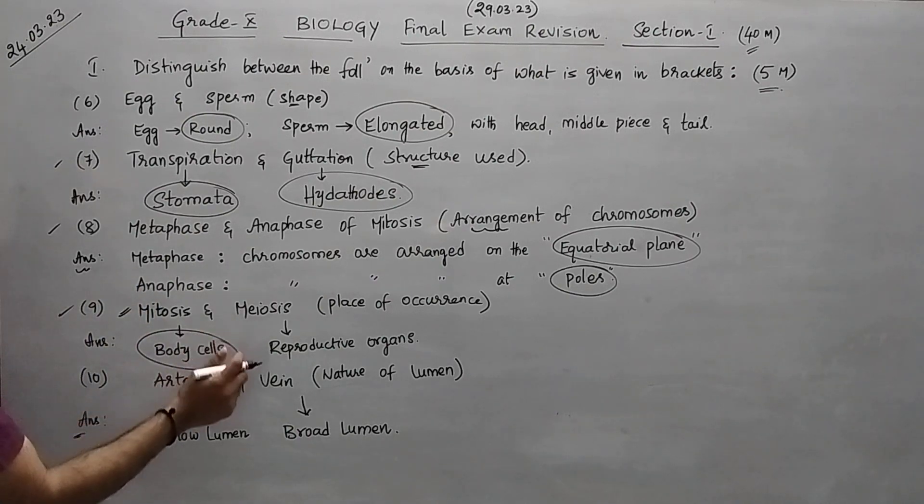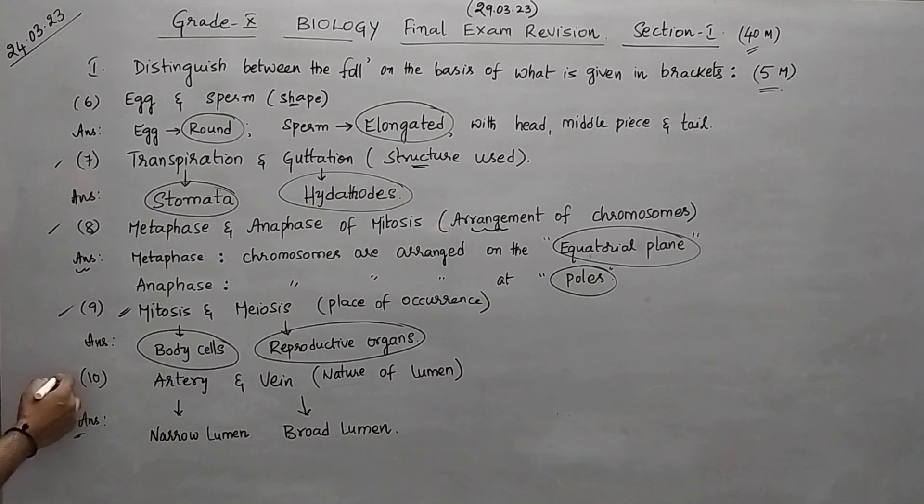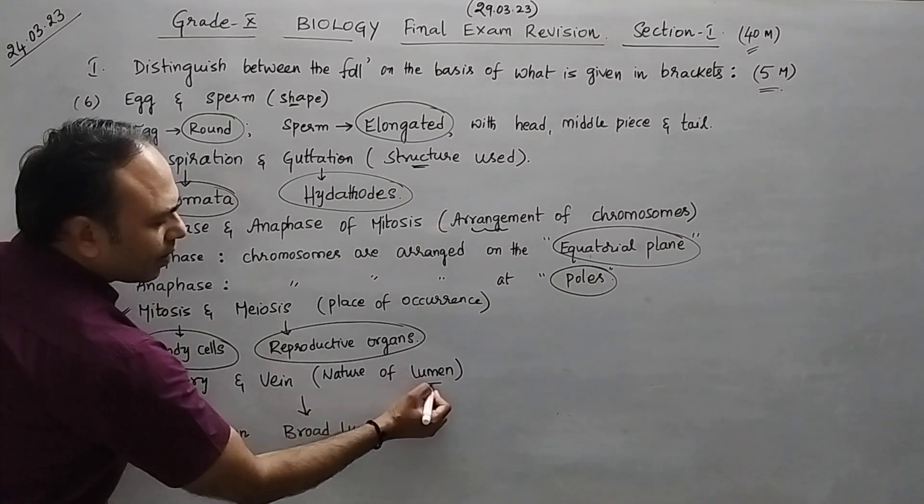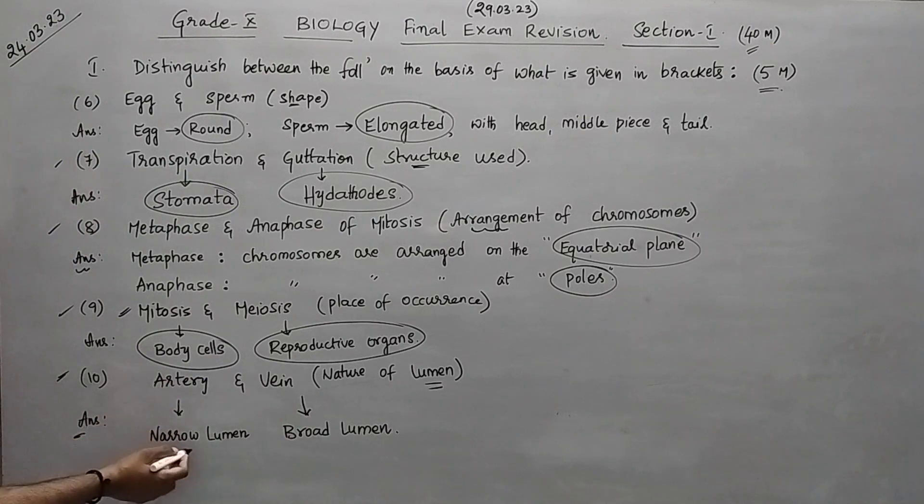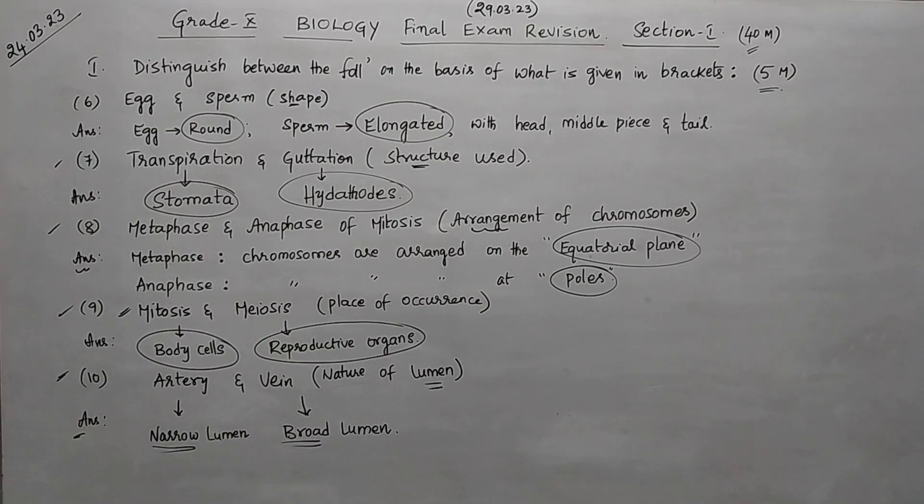Question number nine, mitosis and meiosis, place of occurrence. Vegetative cells are body cells. Mitosis takes place in body cells. Meiosis takes place in reproductive organs. Next, ten, arteries and veins - what is the nature of lumen? In the case of artery it is narrow, but in the case of vein the lumen is broad. Copy the ten questions.